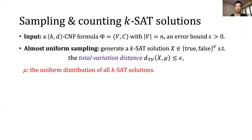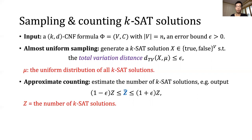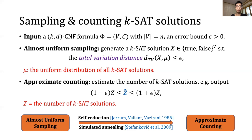Our work focuses on sampling and counting problems. The input contains a CNF formula phi and an error bound epsilon. When sampling, the algorithm needs to draw a random solution that is almost uniformly distributed over all solutions. Specifically, let mu denote the uniform distribution over all CNF solutions; the output distribution should be very close to mu, with total variation distance bounded by epsilon. The counting problem requires estimating the number of solutions Z; the algorithm outputs Z-hat, an epsilon-approximation to Z. Sampling and counting are closely related: if we can perform near-uniform sampling, then by reductions we can do approximate counting.